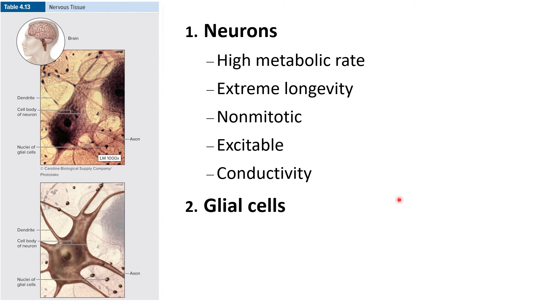Glial cells are the second type of nervous tissue, and those are cells that assist the neurons in their functions. We're going to get into glial cells in a little more detail later in this lecture.